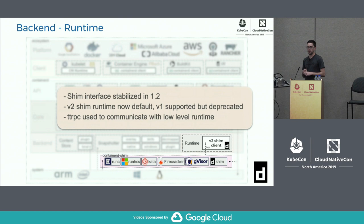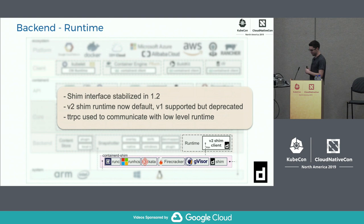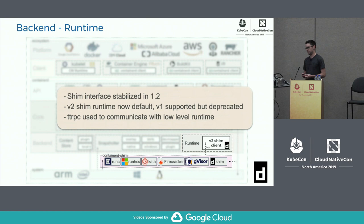In Container D 1.2, we stabilized the shim interface. This API uses a lightweight gRPC protocol called TTRPC — 'teeny tiny RPC' — which has a very small memory footprint. Each shim is a separate binary that listens on a socket using TTRPC. The Container D v2 runtime has a client that connects to those runtimes to manage container lifecycle. v2 is now the default; v1 is still present but deprecated.